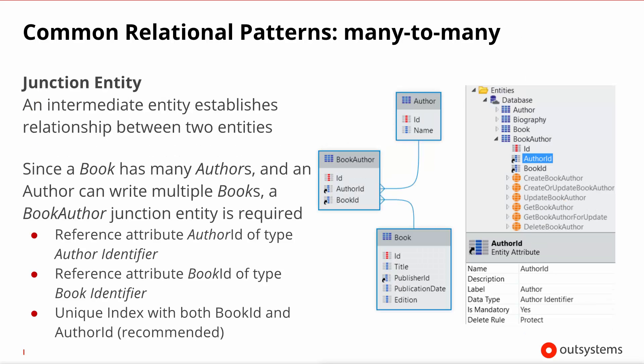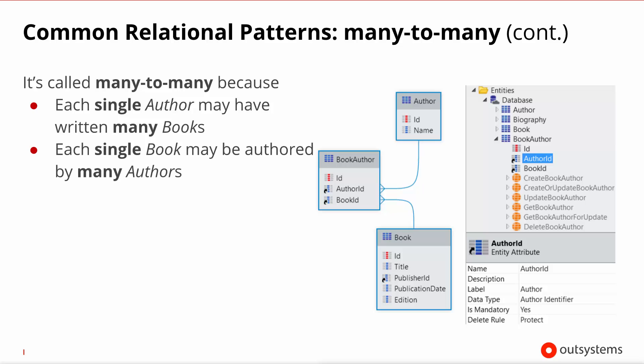The third pattern is the junction entity. It is implemented by having a third entity that correlates two entities. Since a book can have multiple authors and an author can write multiple books, we cannot use a master-detail relationship. So we use a junction entity, book-author, that references the author by its ID and the book by its ID. This leverages a many-to-many relationship, because each author may have written multiple books and each single book may have multiple authors.